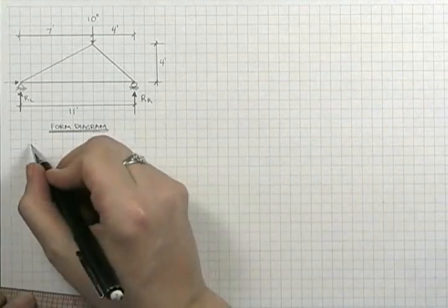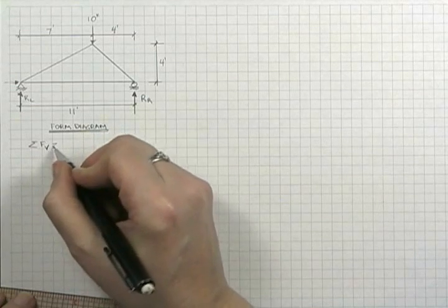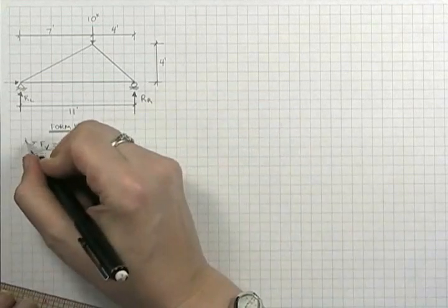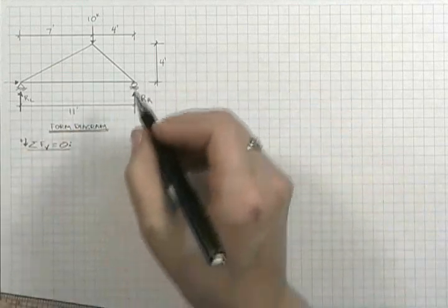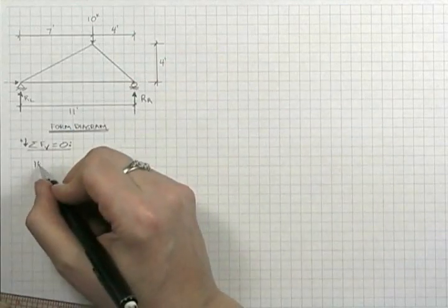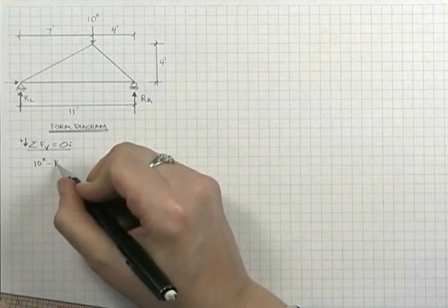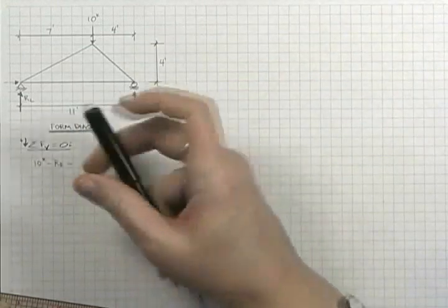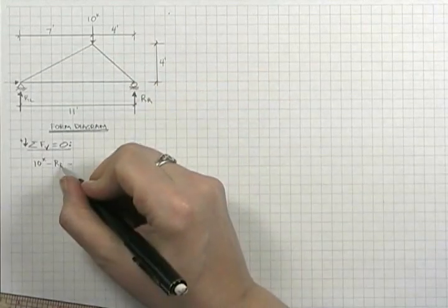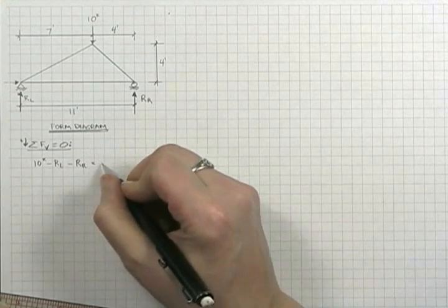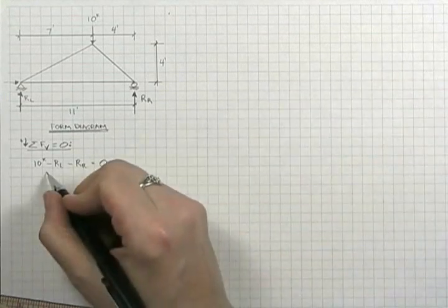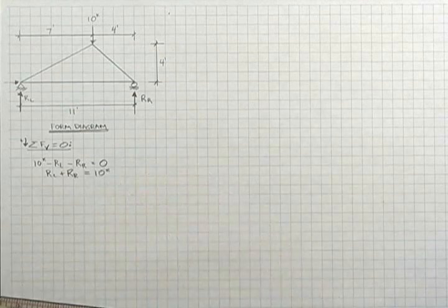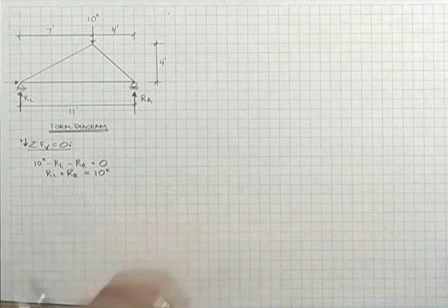Using our basic equations of static equilibrium, sum of the forces vertically equal to zero, and we'll use the same convention that your book uses, that downward is positive. So we have a 10 kip force minus r right, because that, we're assuming that's going upward. Meant to make that r left. And r right all equals zero, or in other words, r left plus r right equal to 10 kips. Not an equation that we can solve at this point, because we have two unknowns in one equation.